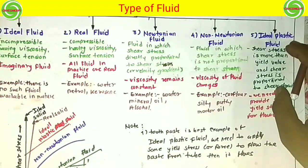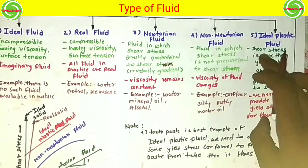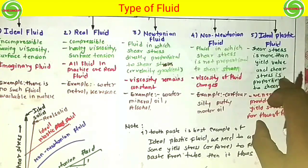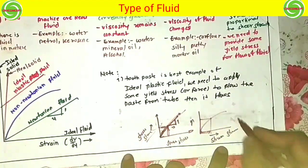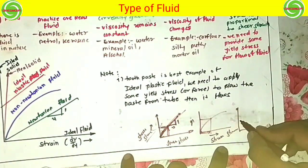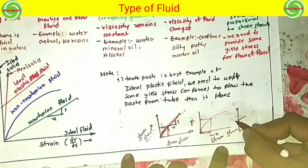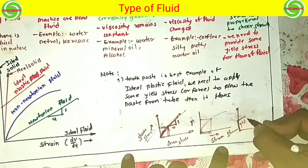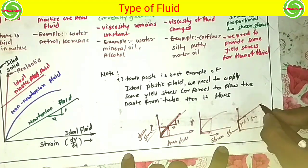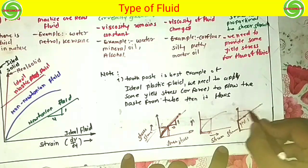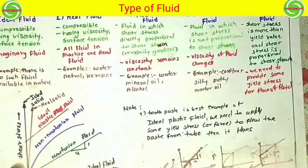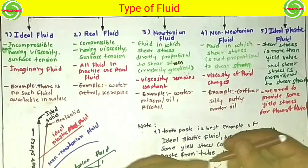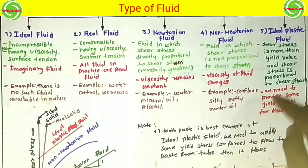Now we come to the fifth type: ideal plastic fluid. In ideal plastic fluid, if the shear stress is more than the yield value, then the shear stress is proportional to the rate of shear strain. In the ideal plastic fluid, we have to apply a certain yield stress. Then it flows, and then it maintains the relationship of shear stress to shear strain. We need to provide some yield stress for the flow of the liquid.